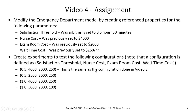I'm defining a configuration as this tuple of satisfaction threshold, nurse cost, exam cost, and waiting time cost. I want you to run a complete OpQuest optimization for the following four configurations. The first is: 0.4, $4,000, $2,000, $250 — this is the same configuration that we did in video 3, so this can be a verification that you've done the model correctly and you should get the same results.